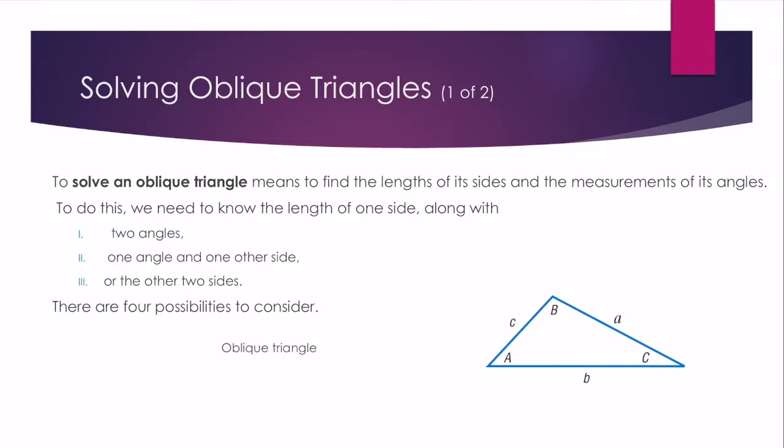To solve an oblique triangle means to find the lengths of all of its sides and the measurements of all of its angles. To do this, we need to know the length of one side along with two angles, one angle and one other side, or the other two sides, so all three sides. There are four different possibilities, four different cases to consider.